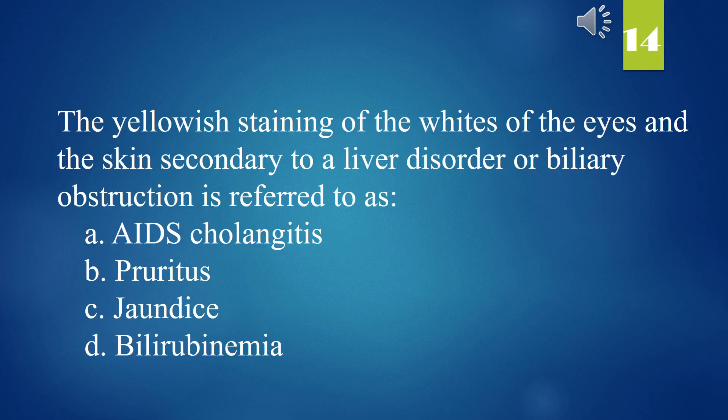The yellowish staining of the whites of the eyes and the skin secondary to a liver disorder or biliary obstruction is referred to as: A. AIDS cholangitis. B. Pruritus. C. Jaundice. D. Bilirubinemia. The answer is C. Jaundice.